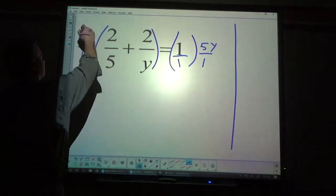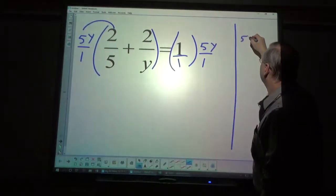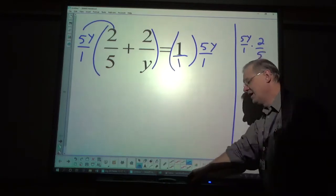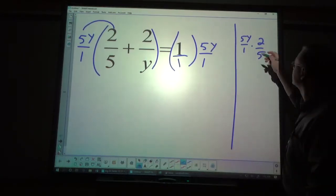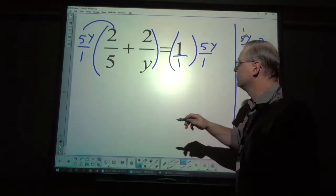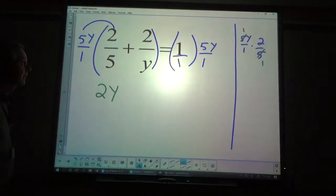For example, when I distribute here, that is 5y over 1 times 2 over 5. And you might want to do that kind of thing occasionally. So, the 5s are going to cancel out, so that leaves me with 2y.